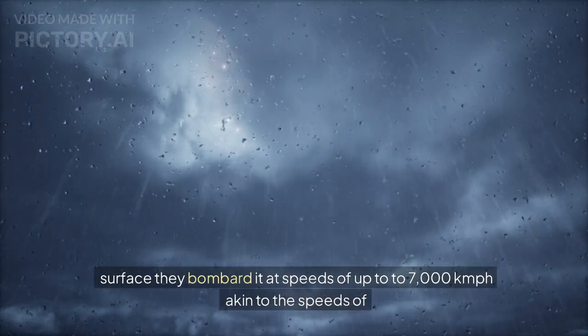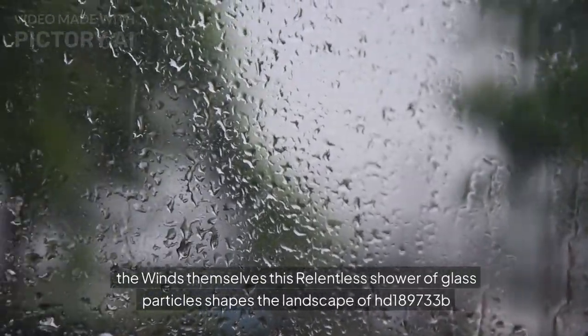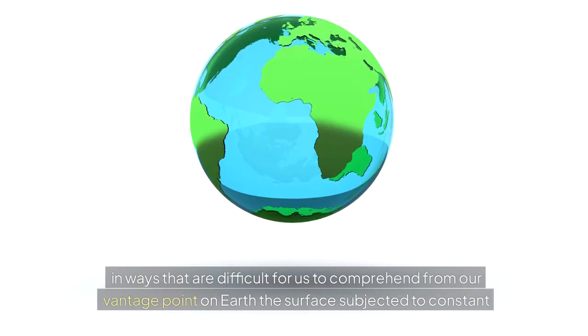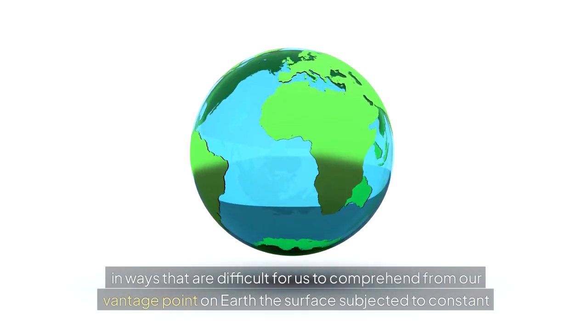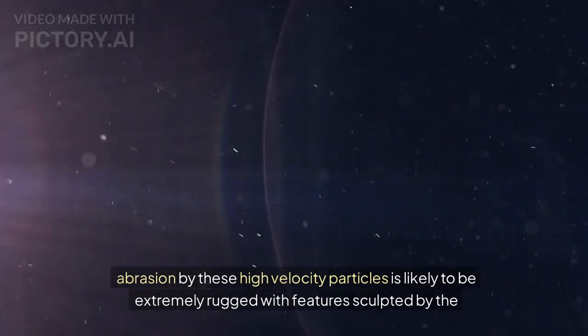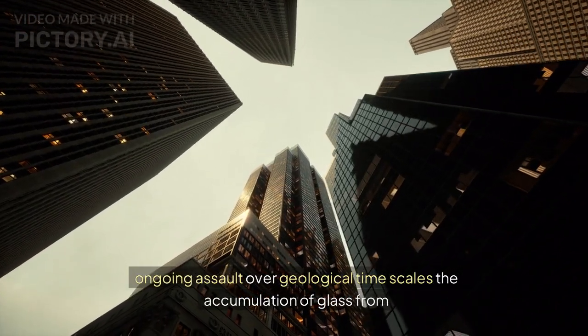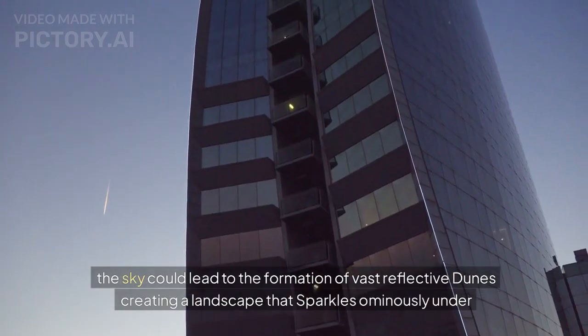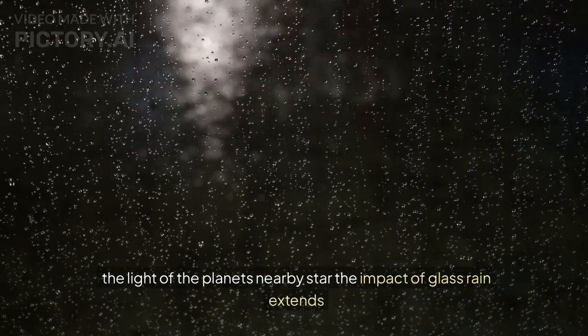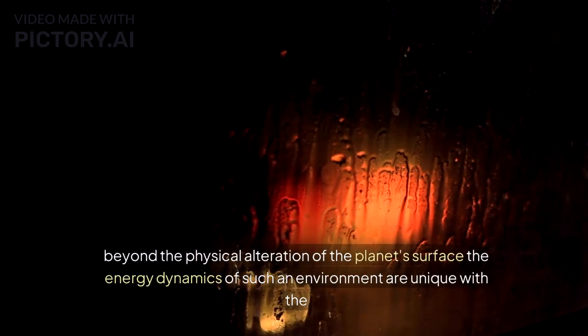They bombard at speeds of up to 7,000 km/h, akin to the speeds of the winds themselves. This relentless shower of glass particles shapes the landscape of HD 189733b in ways that are difficult for us to comprehend. The surface, subjected to constant abrasion by these high-velocity particles, is likely to be extremely rugged. The accumulation of glass from the sky could lead to the formation of vast reflective dunes, creating a landscape that sparkles ominously under the light of the planet's nearby star.